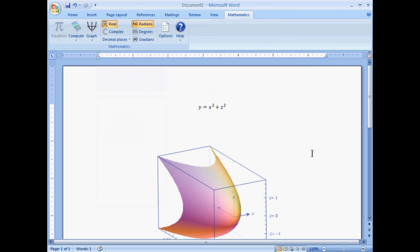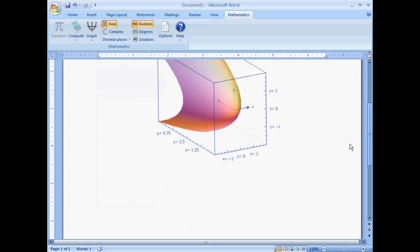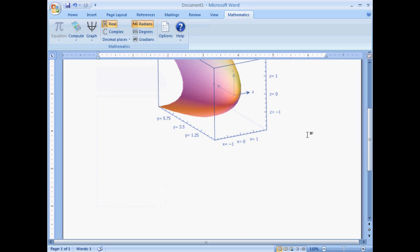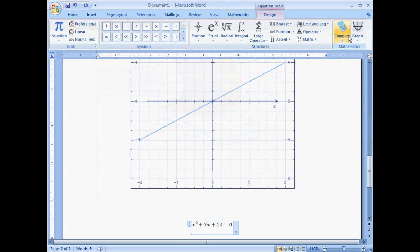Graphs can be created in 2D or 3D. There are options for polar, spherical, and cylindrical coordinates, and the graphs can be customized in a number of ways.